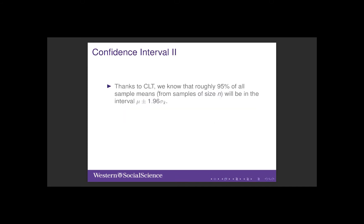Thanks to the central limit theorem, we know that roughly 95% of all sample means for samples of size n will be in the interval mu plus or minus 1.96 times the standard error.